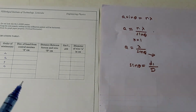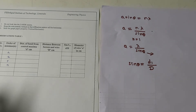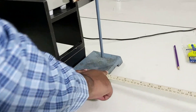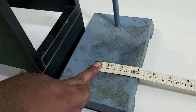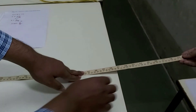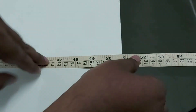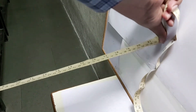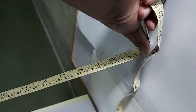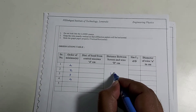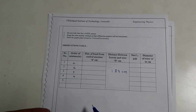Let us first take the reading of capital D — the distance between wire and screen. Using the measuring tape: the wire is at this level, and from this level we measure the distance up to the screen. This distance is 129 centimeters, and in addition to that 55 centimeters, so 129 plus 55 gives our total distance capital D equal to 184 centimeters.